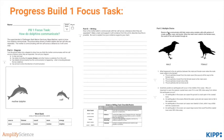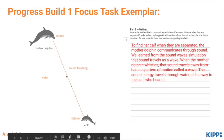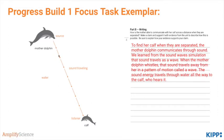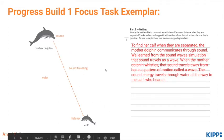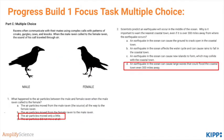In the progress build one focus task, students are asked to diagram and then write about how the mother dolphin uses sound to communicate with the calf, plus answer a few multiple choice questions. Go ahead and take a few minutes to complete the focus task now, then check back here for answers. Your diagram should have key parts labeled with arrows traveling between the mother dolphin and the calf — a simple straight line would suffice. Go ahead and compare your writing to the exemplar shown here, and then check your multiple choice answers.